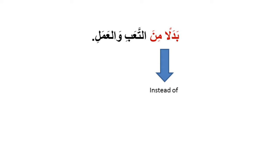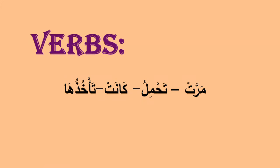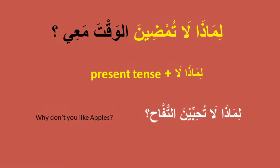بدلا من التعب والعمل — 'instead of working'. بدلا من means 'instead of' — that's a useful phrase. For example: أريد الشاي بدلا من القهوة — I want tea instead of coffee. لماذا لا تمضين — لماذا لا means 'why don't you'. You can change the verb: لماذا لا تحبين التفاح — why don't you like apples? The pattern is لماذا لا plus present tense.